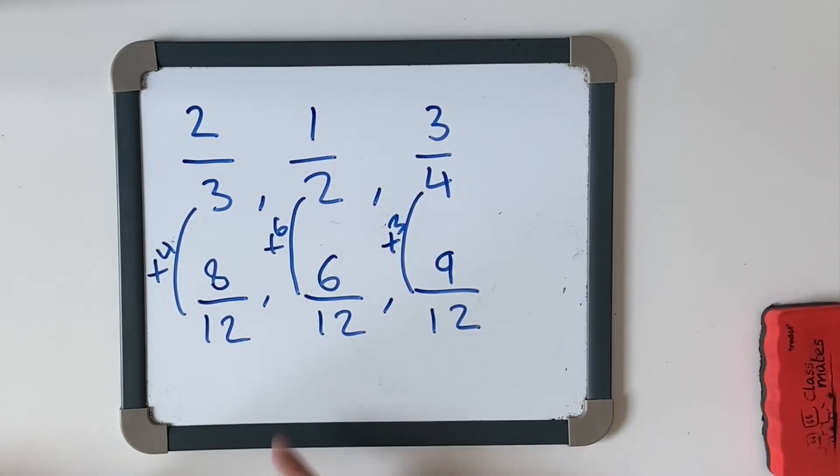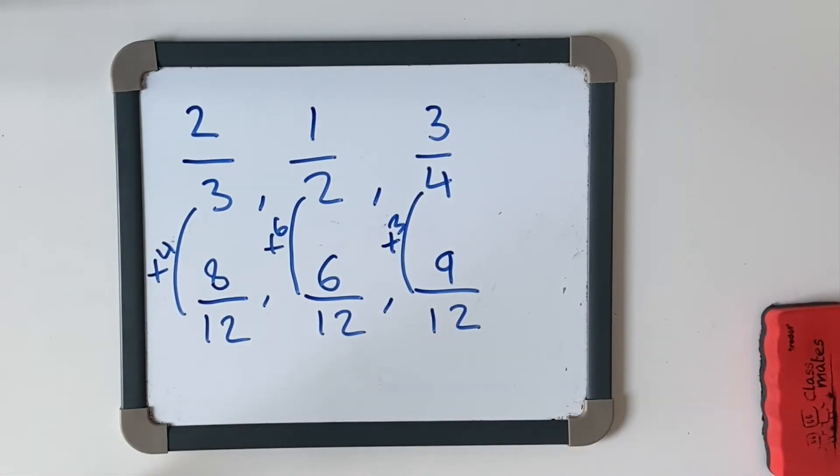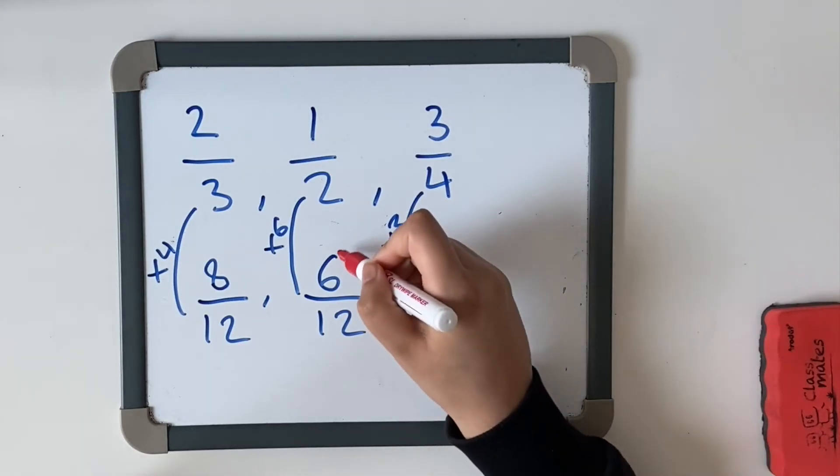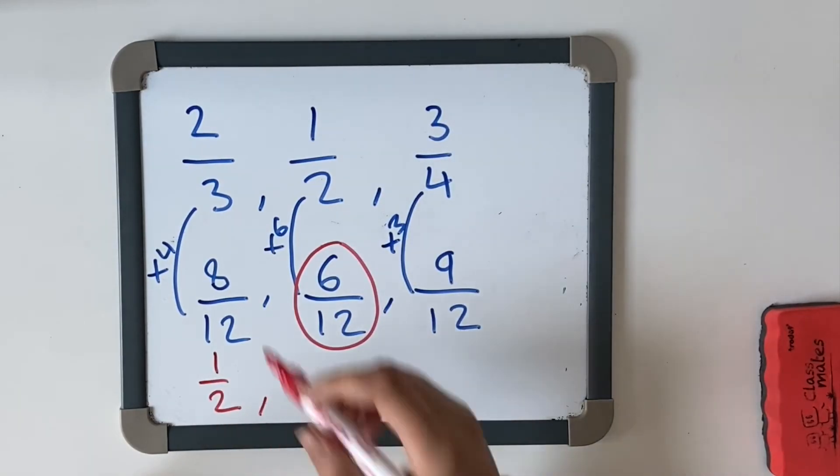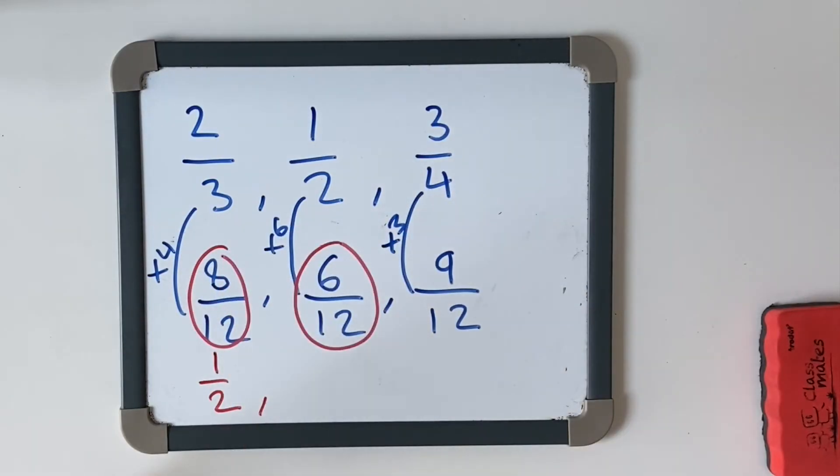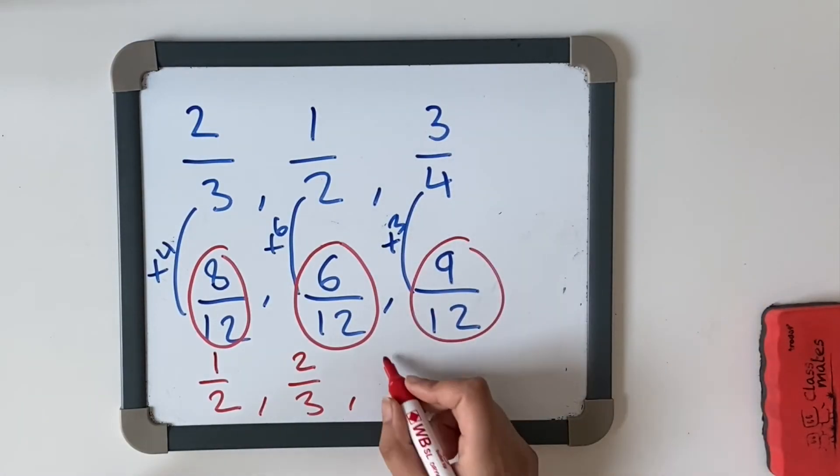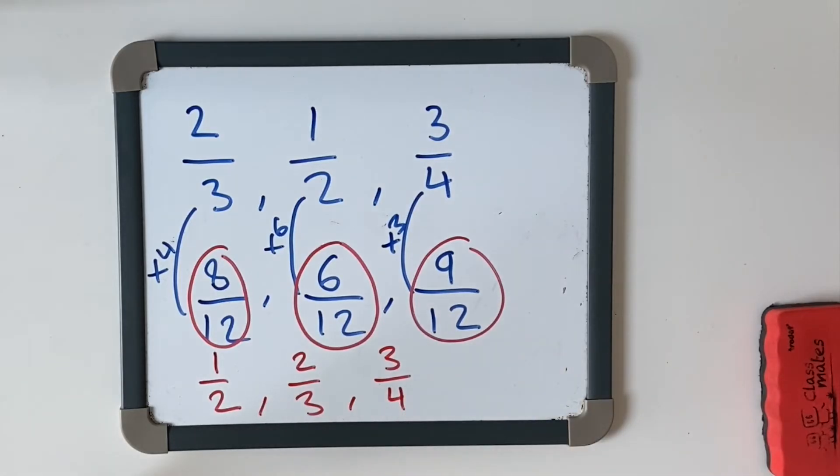Now we're going to look at our numerators. As I can tell, six twelfths is the least, which is a half. So a half is the smallest. Our next one is eight twelfths, so we're going to put two-thirds there. And for our final one is our nine twelfths, which is three-fourths. And there you go. That's our first example done. That was pretty much straightforward. The important thing is to make sure it's in the same denominator, find a multiple and then convert it.